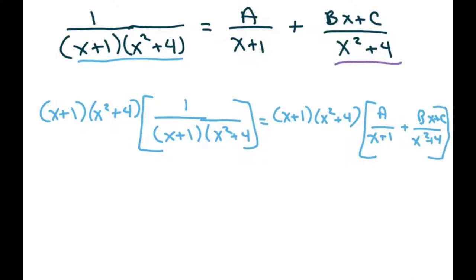This will cancel here, so we're just left with 1 on this side. This is going to cancel with this one, so we're left with A times (x²+4). And for the Bx+C, this cancels, so we're left with (Bx+C)(x+1).